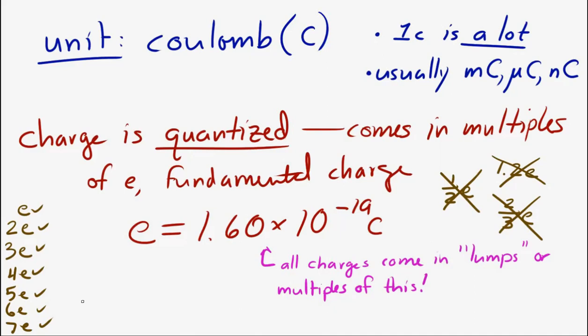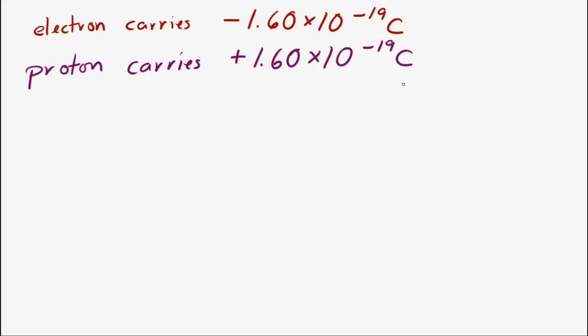The electron, which is the smallest object that carries a negative charge, will carry negative 1.60 times 10 to the minus 19 Coulombs. A proton will carry positive 1.60 times 10 to the minus 19 Coulombs.